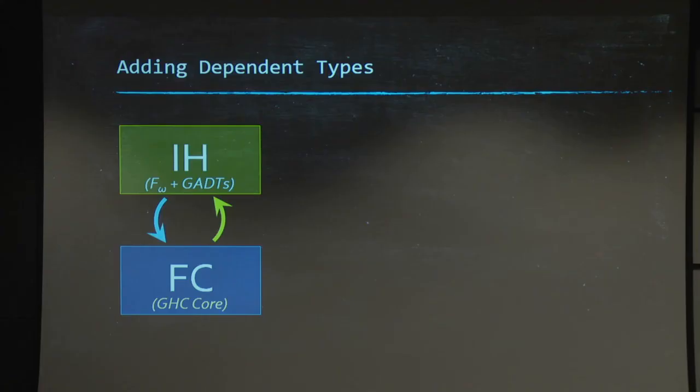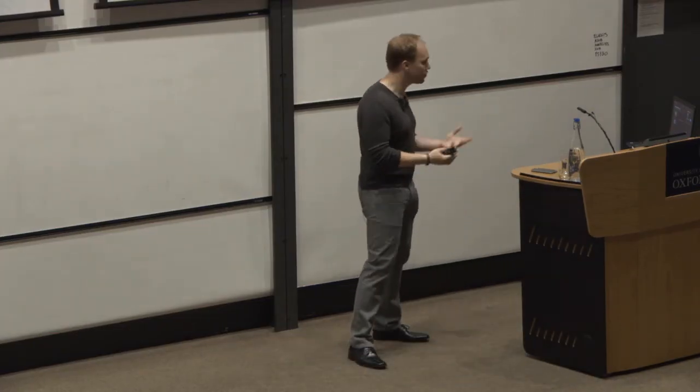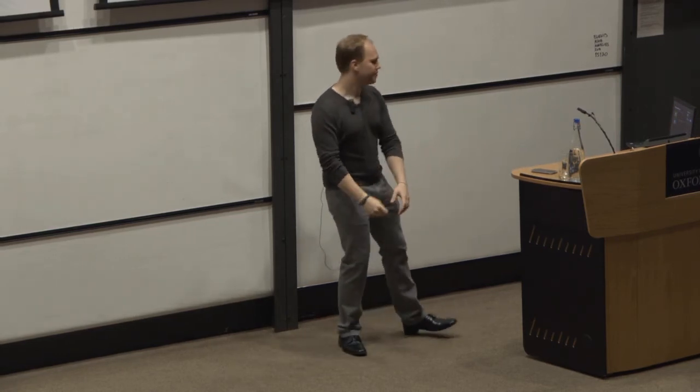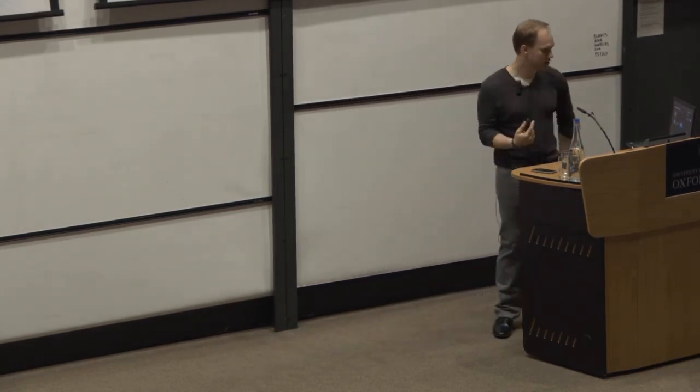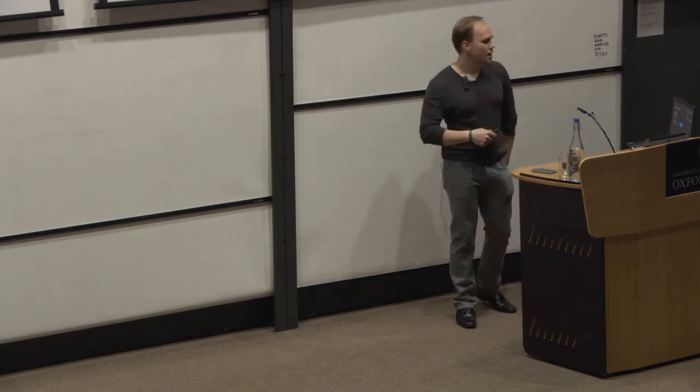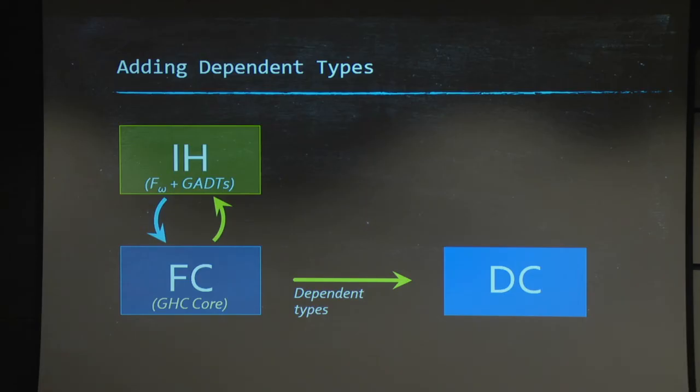Now, so if we want to extend GHC with dependent types, well, first, we need an implementation-oriented language, right? Because we need to replace FC or core, more exactly, with something. So, this is our first contribution, DC, system DC. Essentially, think of DC as being FC with dependent types.